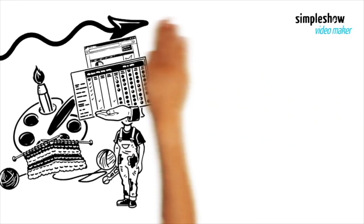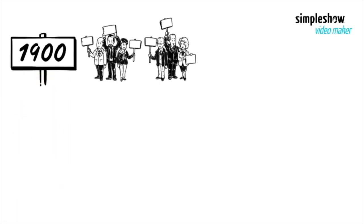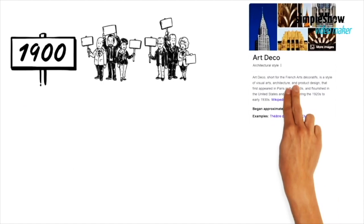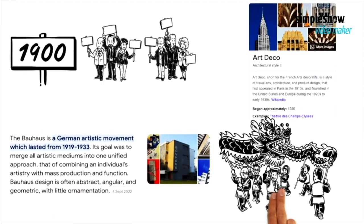In the 1900s, the Bauhaus movement in Germany emphasized simple and useful designs. Art Deco brought stylish design with geometric shapes, and mid-century modern became popular with its simple and functional aesthetics.